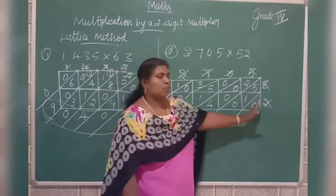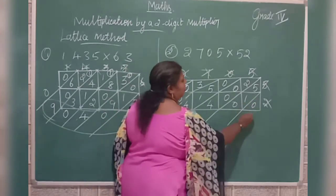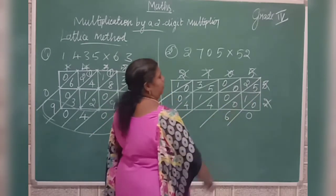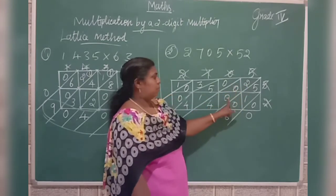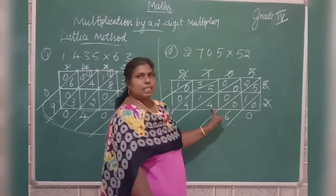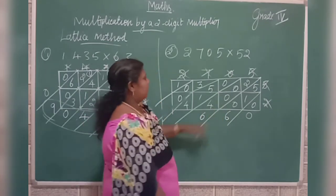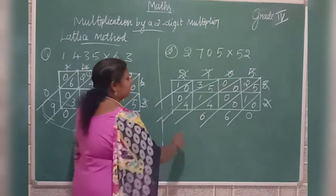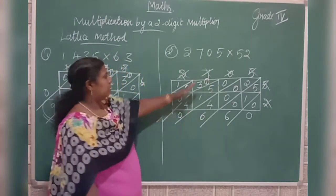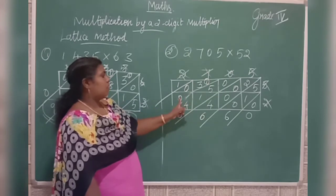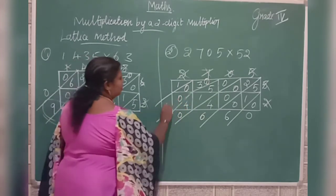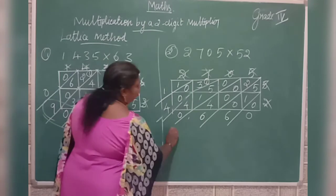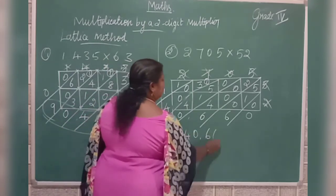Now add the diagonal values: 0. Then 5 plus 1 is 6, plus 0 is 6. Then 2 plus 0 is 2, plus 4 is 6. Then 0 plus 5 is 5, plus 1 is 6, plus 4 is 10 — write 0, carry 1. Then 3 plus 1 is 4, plus 0 is 4, plus 0 is 4, carry 1. The answer is 140,660.